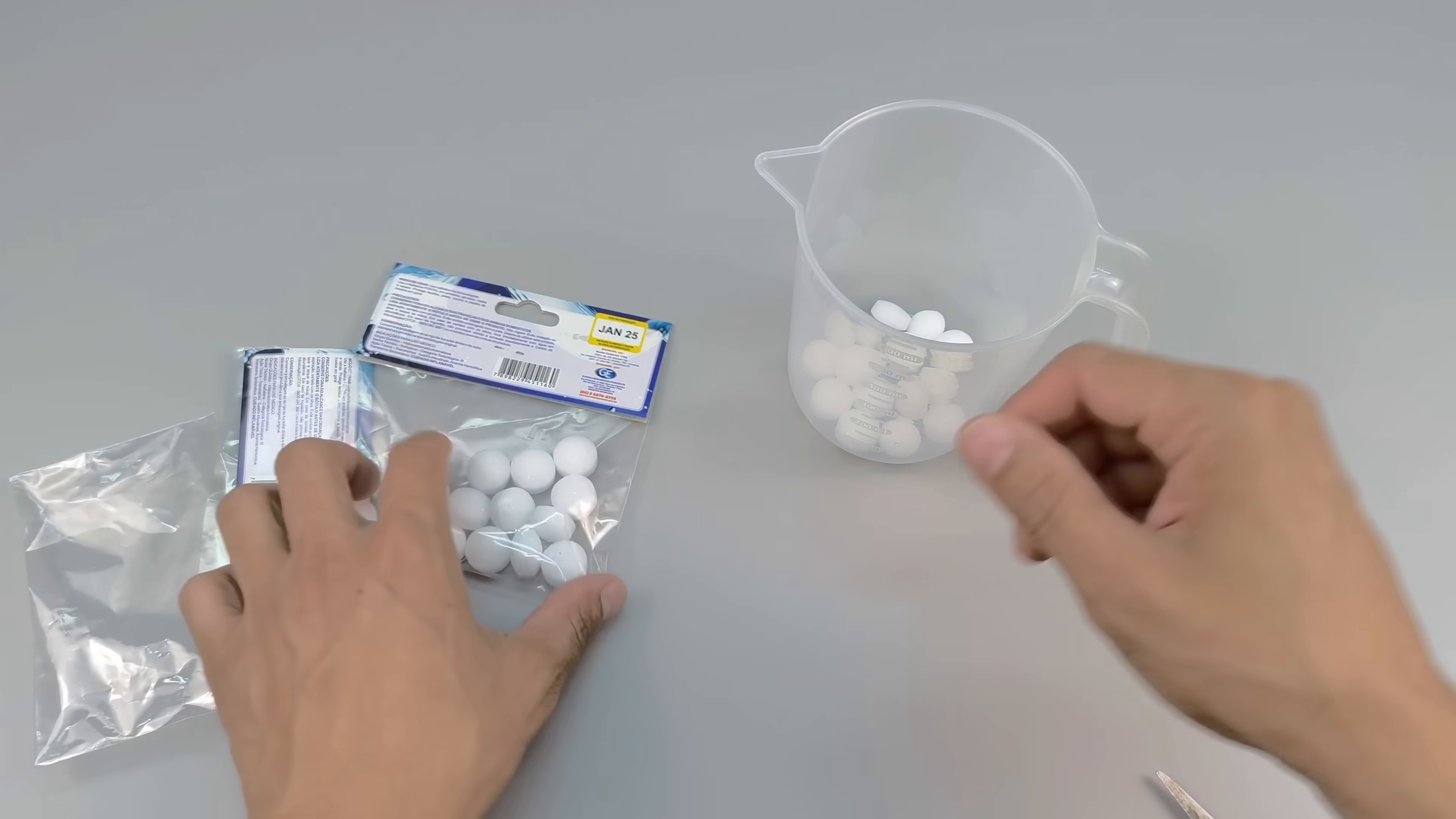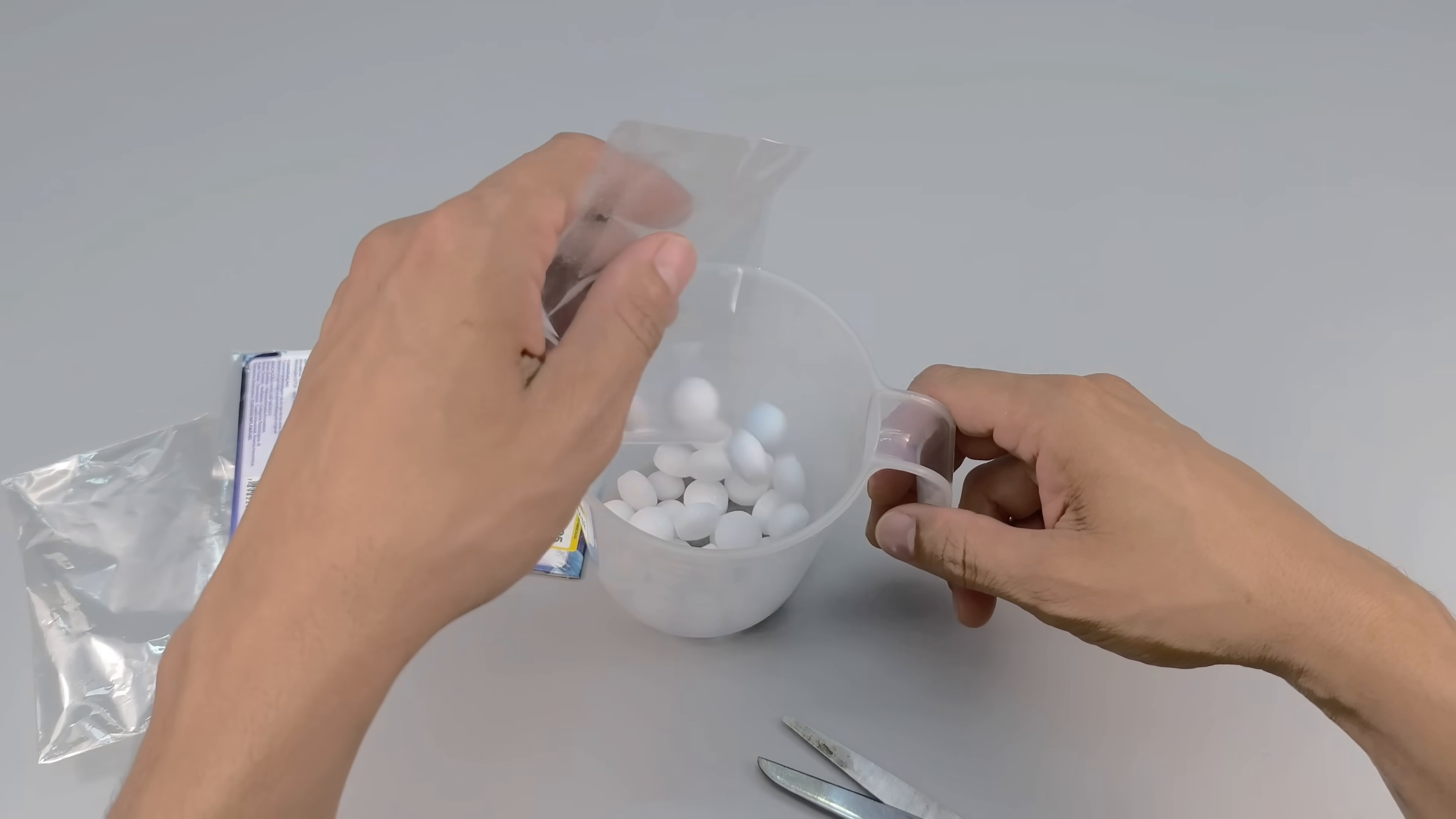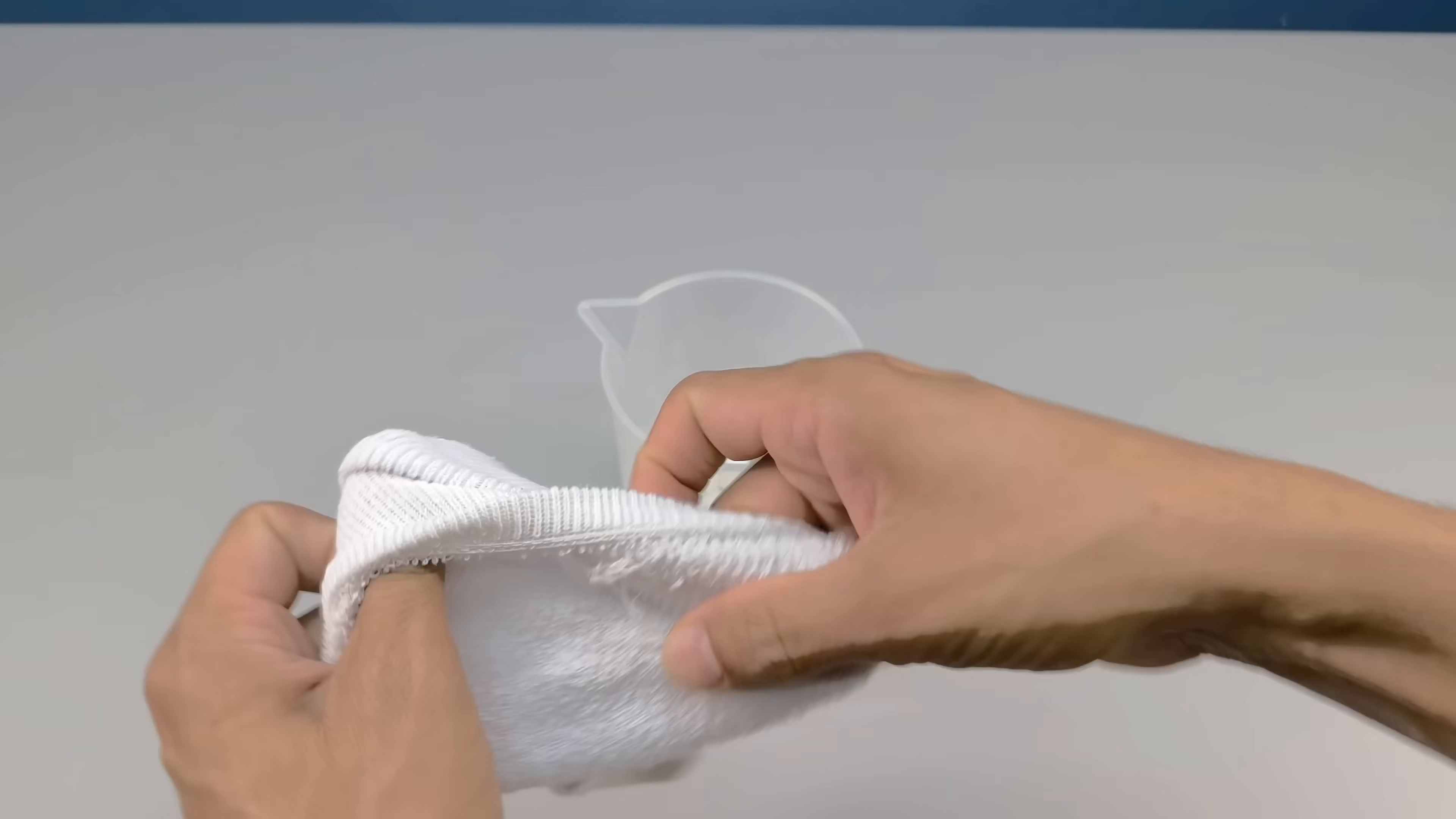It all starts with classic mothballs. They're easily found in markets or grocery stores and are typically used inside drawers and cabinets to keep moths away. But today, their use is quite different. Take a clean cotton sock and carefully place the balls inside one by one, paying close attention.